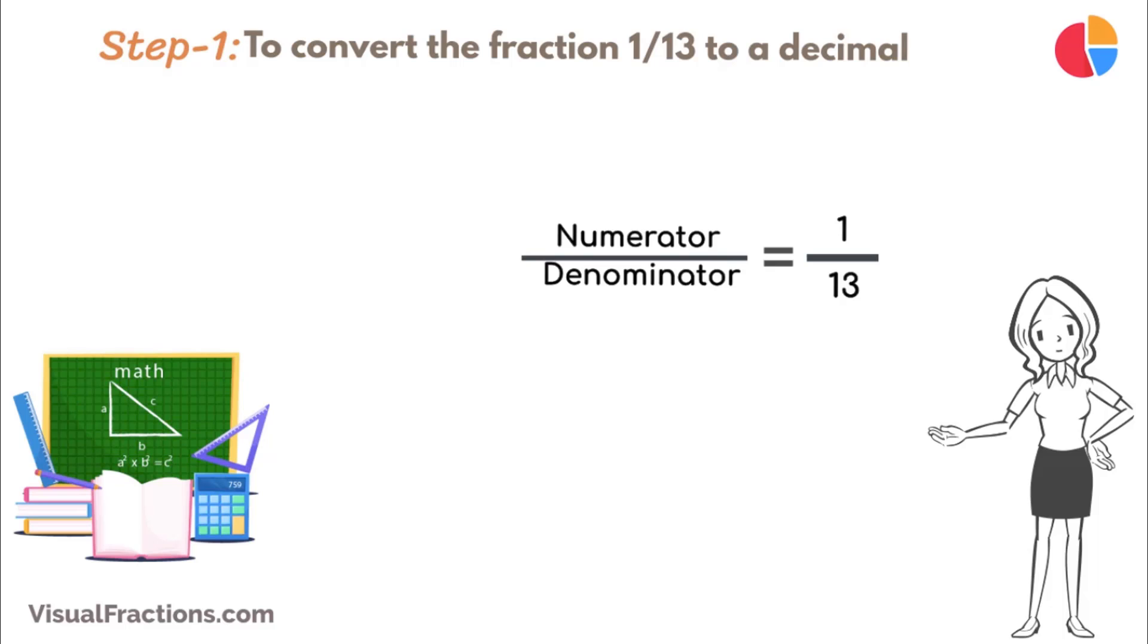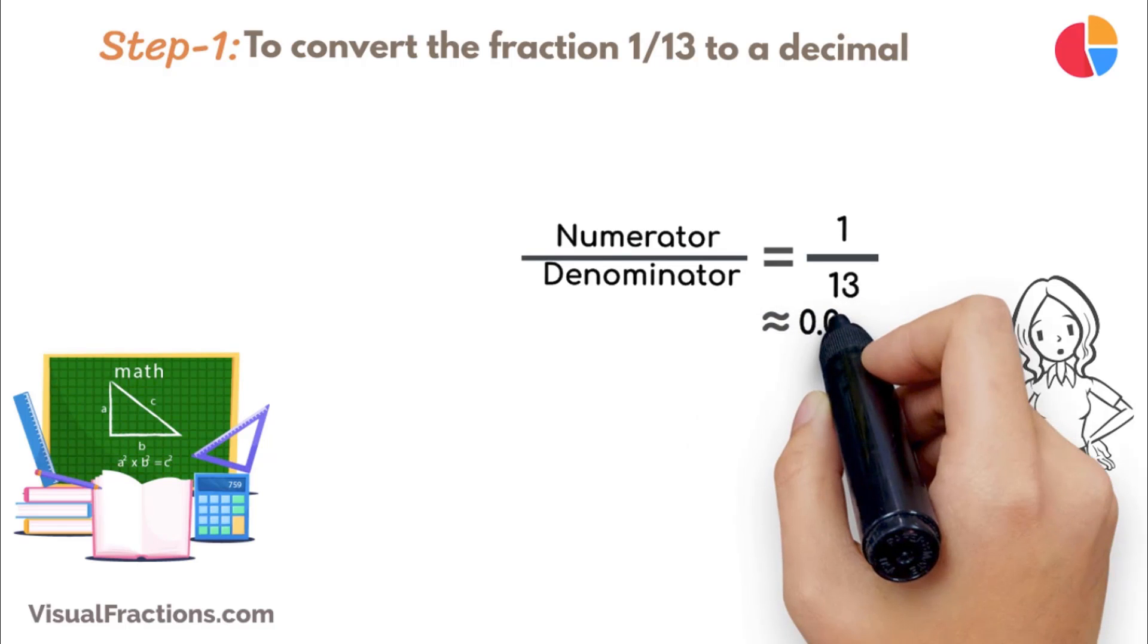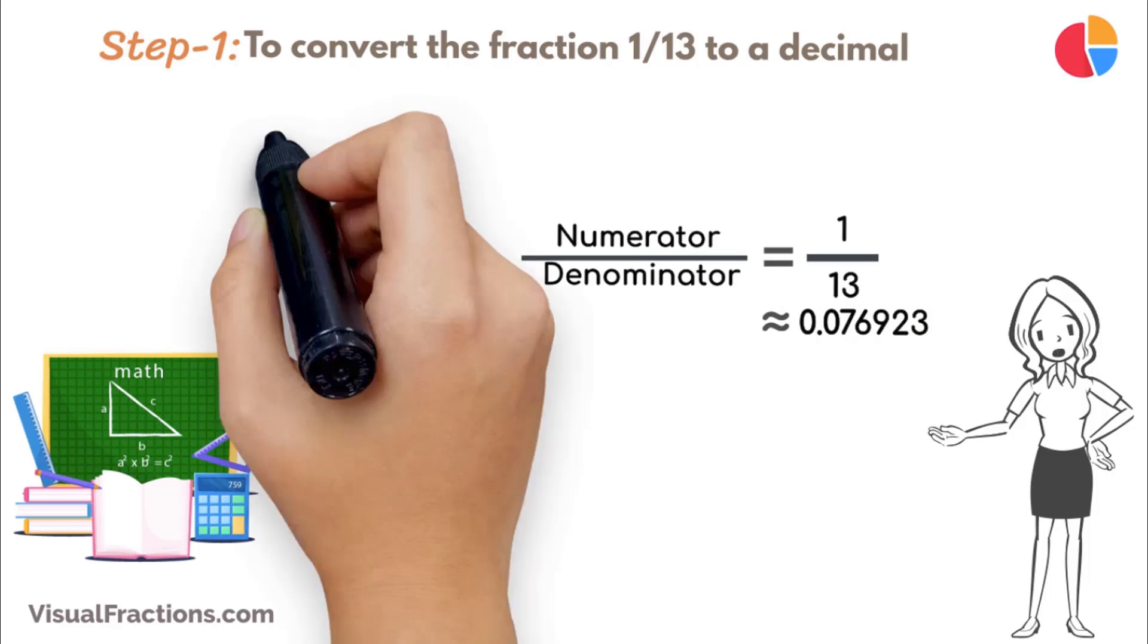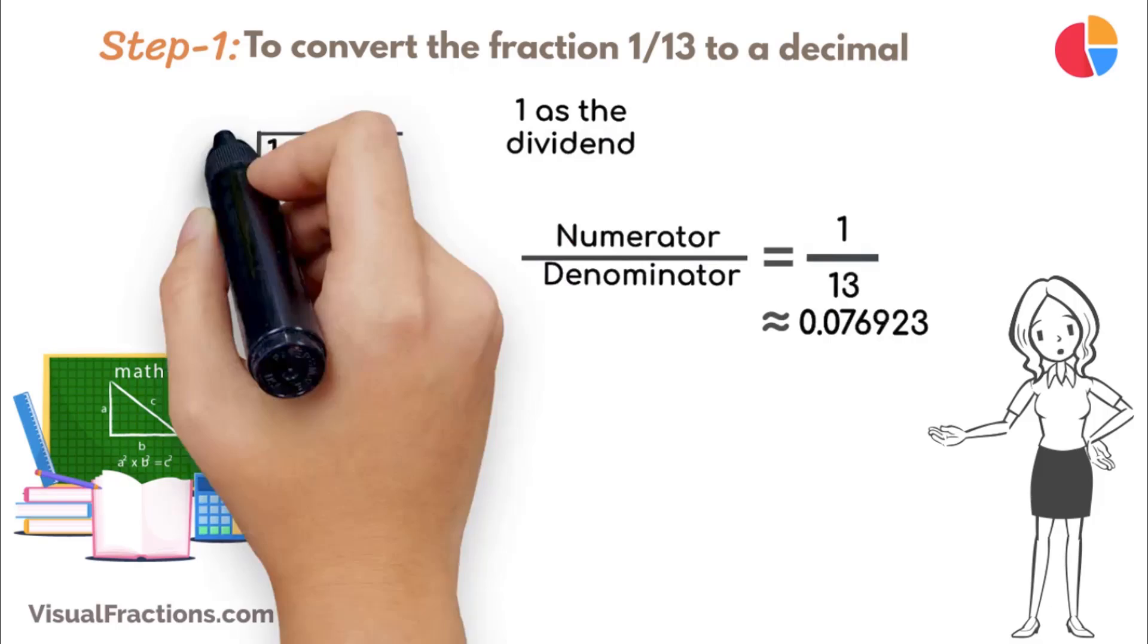Using a calculator, the answer we get is approximately 0.076923 repeating. But let's perform this division by hand using long division. Place 1 as the dividend and 13 as the divisor.